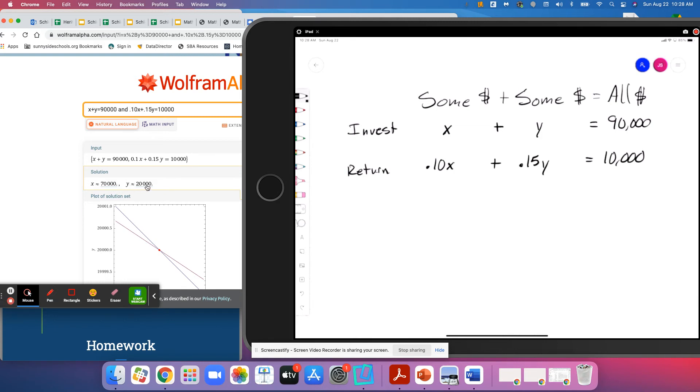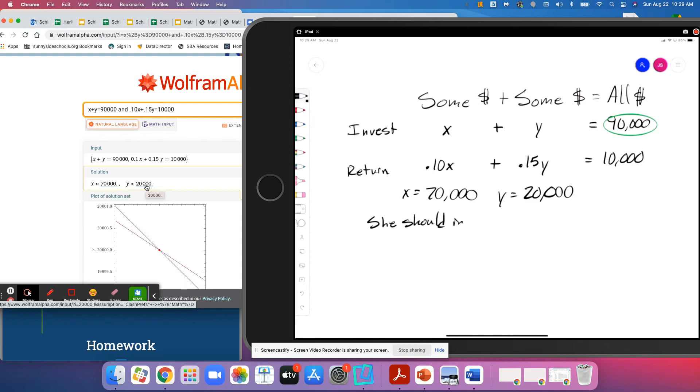Wolfram is gonna say x is $70,000 and y is $20,000. In this course, everything means something, so x equals $70,000 and y equals $20,000. These two together make $90,000, which is how much she invested in total. x was our 10% fund and y was our 15% fund, so she should invest $70,000 in the 10% fund and $20,000 in the 15% fund.